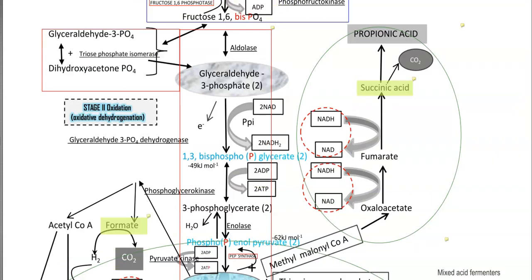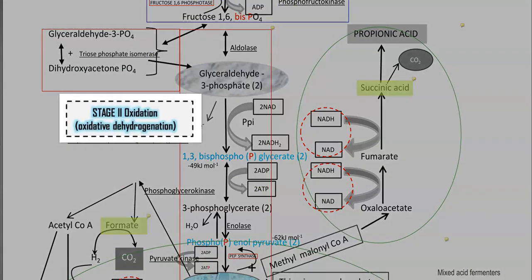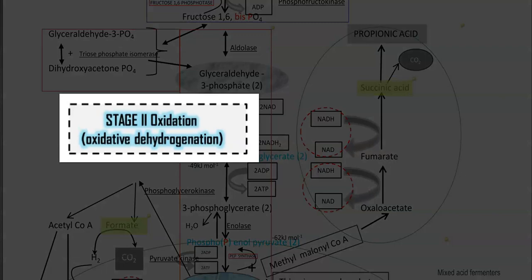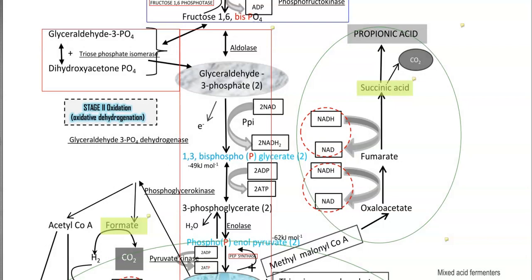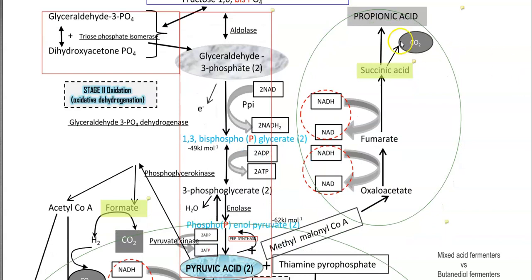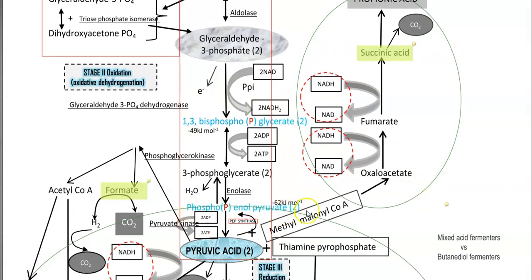In Stage 2, the oxidative dehydrogenation process, fructose-1,6-bisphosphate is converted to glyceraldehyde-3-phosphate, which can be further converted to dihydroxyacetone phosphate with the help of an isomerase enzyme. The glyceraldehyde-3-phosphate is the one that donates electrons, which are passed on to further molecules: 1,3-bisphosphoglycerate, then 3-phosphoglycerate, phosphoenolpyruvate, and finally pyruvic acid.